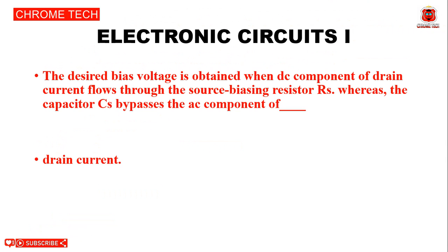Next question: The desired bias voltage is obtained when the DC components of drain current flow through the source bias resistor RS, whereas the capacitor CS bypasses the AC components of drain current. The answer is drain current.